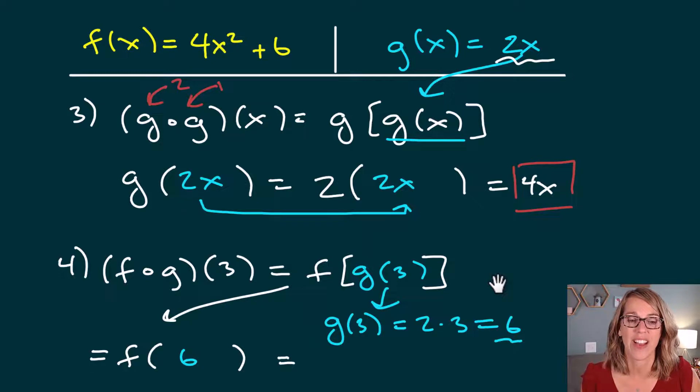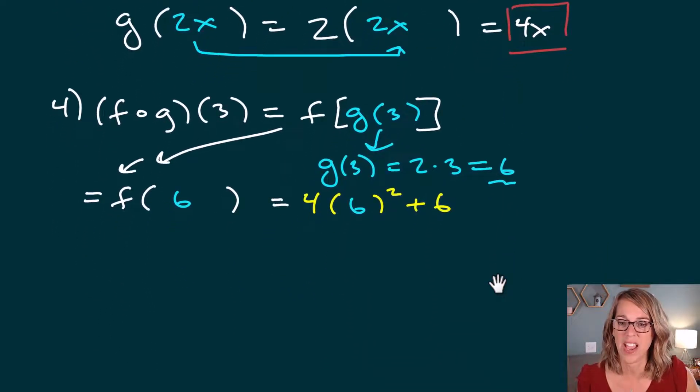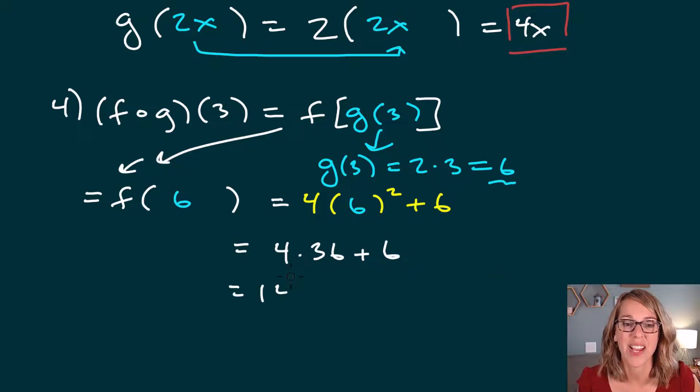Now all I've got left to do is to apply my function f. So let's go back up to the rule for f. f takes whatever you give it. It's going to square it, multiply it by 4, and then add a 6. So it's going to be 4 times my input squared plus 6. And my input is 6. So doing the math here, this becomes 4 times 6 squared. So 4 times 36 plus 6. 4 times 36 is 144 plus 6. That one I can do in my head and I end up with 150.